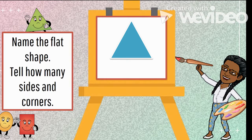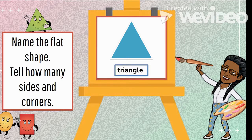Take a look at this black shape. Can you name it and tell how many sides and how many corners? Let's try. This is a triangle. Good job, boys and girls.